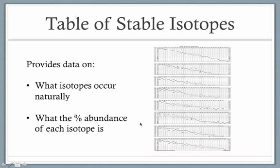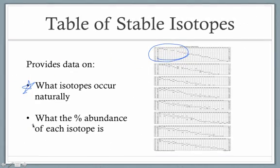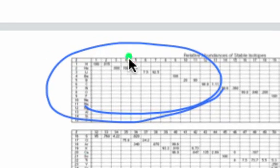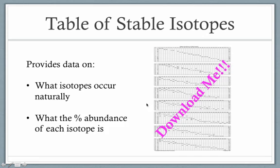The table of stable isotopes is what we're looking for. This data table provides two important pieces of information: first, it tells us which isotopes naturally occur for each element — some boxes on the table are filled with information and many are left empty, where filled boxes represent isotopes that exist and empty ones represent isotopes that don't. Second, it tells us the percent abundance of each isotope, found inside each filled box. You'll need to download this table — it's available at the bottom of the page this video is posted on or in your download section.